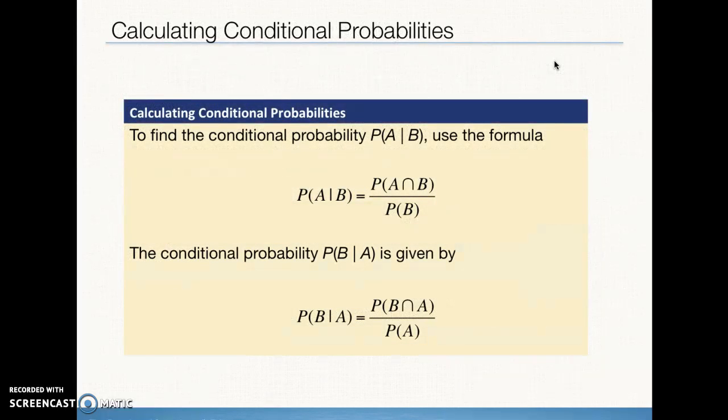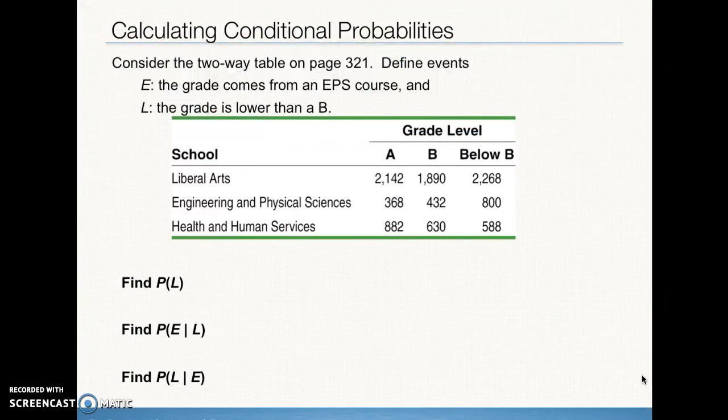When we want to use the formula, this is on your formula sheet. The probability of A given B is the AND probability between A and B, the probability of A and B in the numerator, divided by the probability of B. So, that's why I kind of said that it looks a little bit like a fraction bar, because whatever's on the right-hand side of that line goes in the denominator. The probability, when we switch the variables B given A, is given by the probability of B AND A divided by the probability of A, changes only to the denominator. The numerator doesn't change because the probability of A AND B is equal to the probability of B AND A.